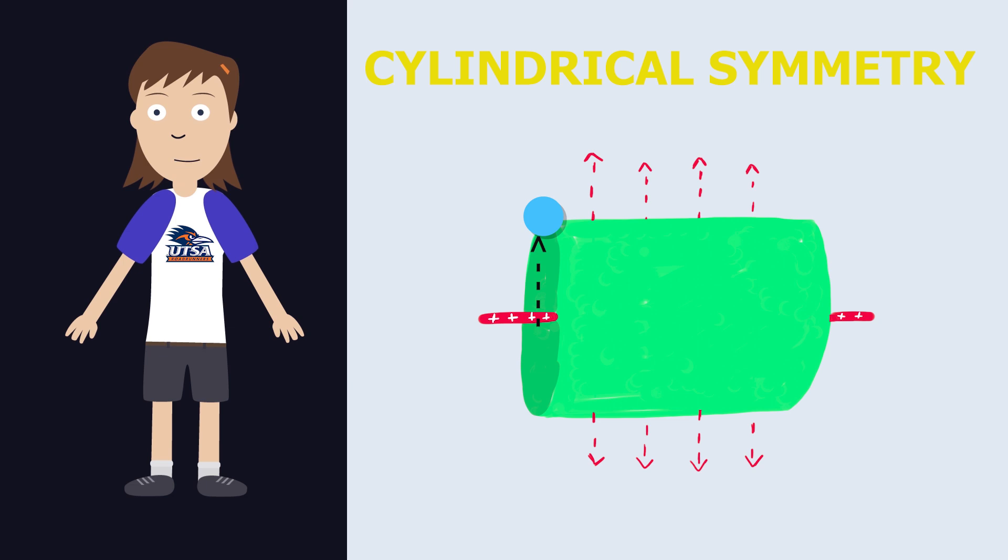In cylindrical symmetry, there is a linear charge and we want to know the electric field at a point at distance r.